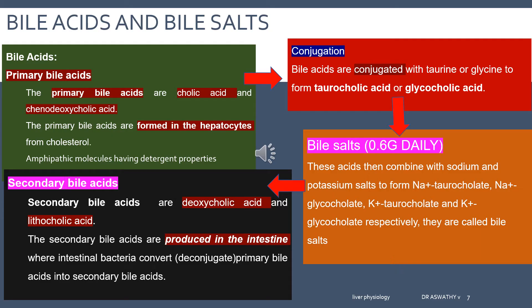Why is this conjugation needed? In order to increase the ionization capacity of the bile acids, enhance their solubility, and prevent precipitation. The conjugated bile acids then produce salts with sodium and potassium, giving sodium taurocholate, sodium glycocholate, potassium taurocholate and potassium glycocholate respectively. These are called the bile salts. The liver prepares about 0.6 grams of bile salts daily.